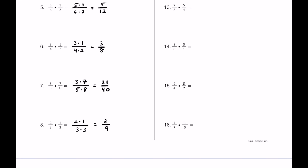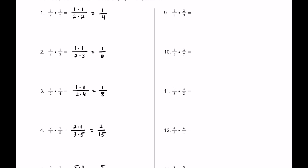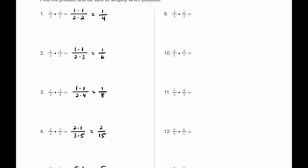So far for problems 1 through 8, none of these answers can be simplified — all we had to do was multiply. For number 9, we have 4 thirds multiplied by 2 thirds, so 4 times 2 is 8 on top, and 3 times 3 is 9 on bottom — 8 ninths. For number 10, 4 times 3 is 12 on top, and 5 times 7 is 35 on bottom, giving us 12 thirty-fifths.